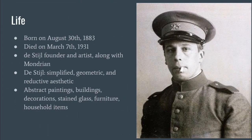Theo van Doesburg was born as Christian Emil Marie Kupfer on August 30, 1883 in the Netherlands. His father was Willem Kupfer and he decided to change his name because he thought of his stepfather, Theodoris Doesburg, as his natural father. He died on March 7, 1931 in Switzerland of a heart attack when he was 47 years old. He served in the Dutch military in World War I from 1914 to 1916.